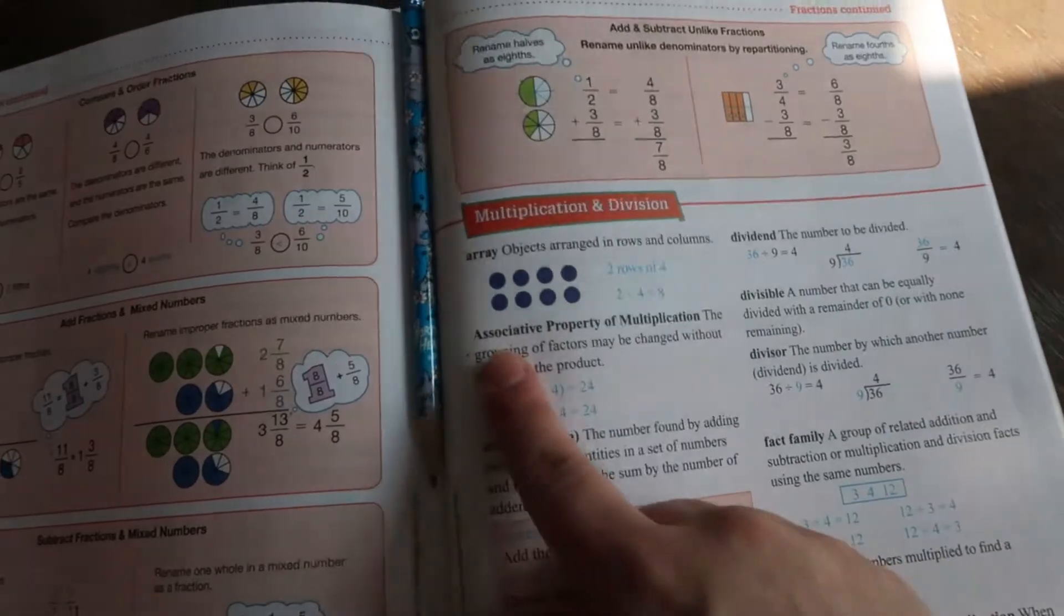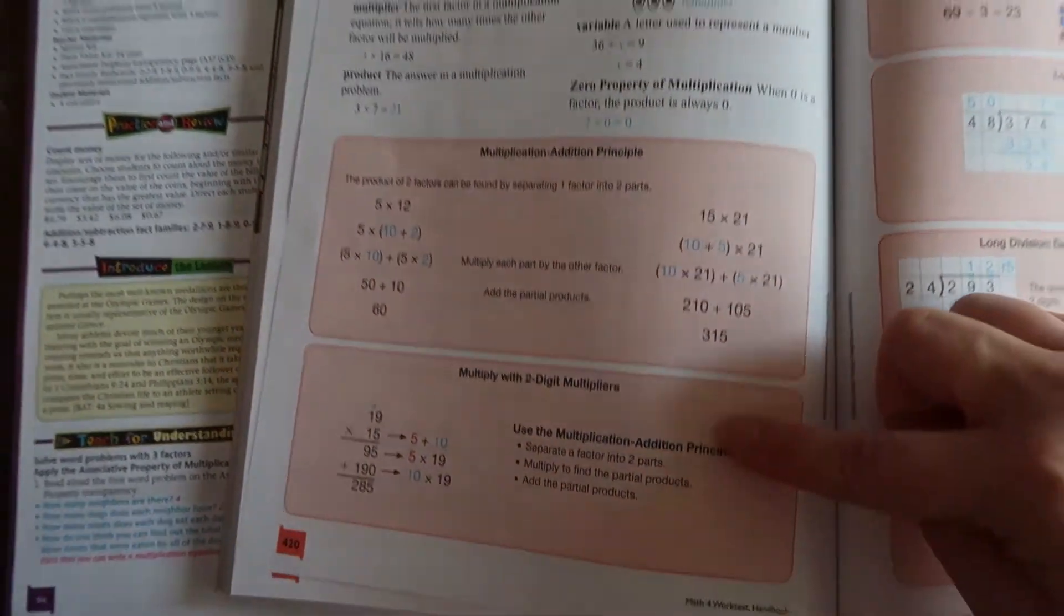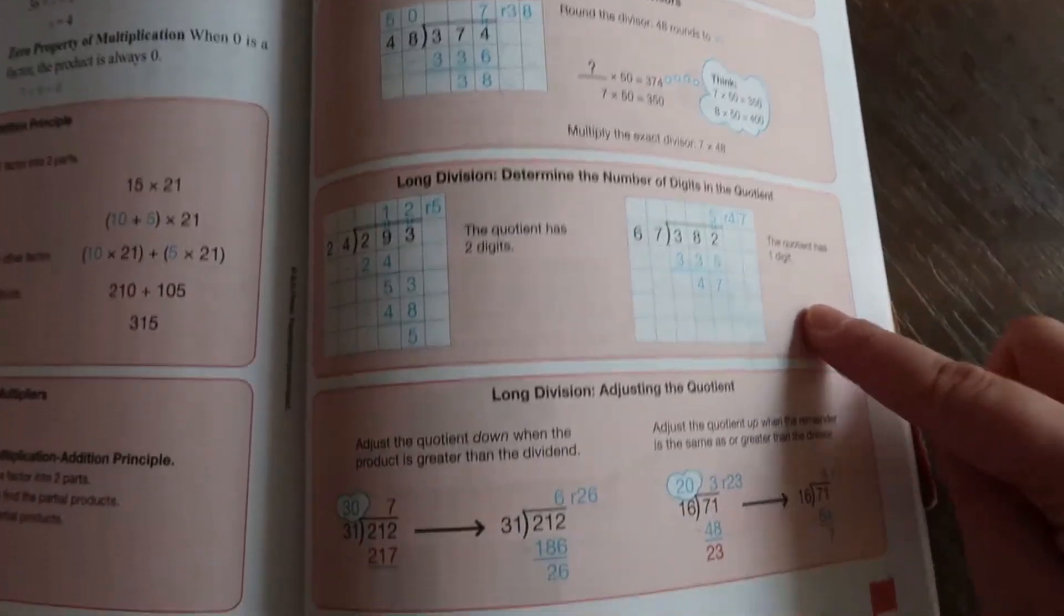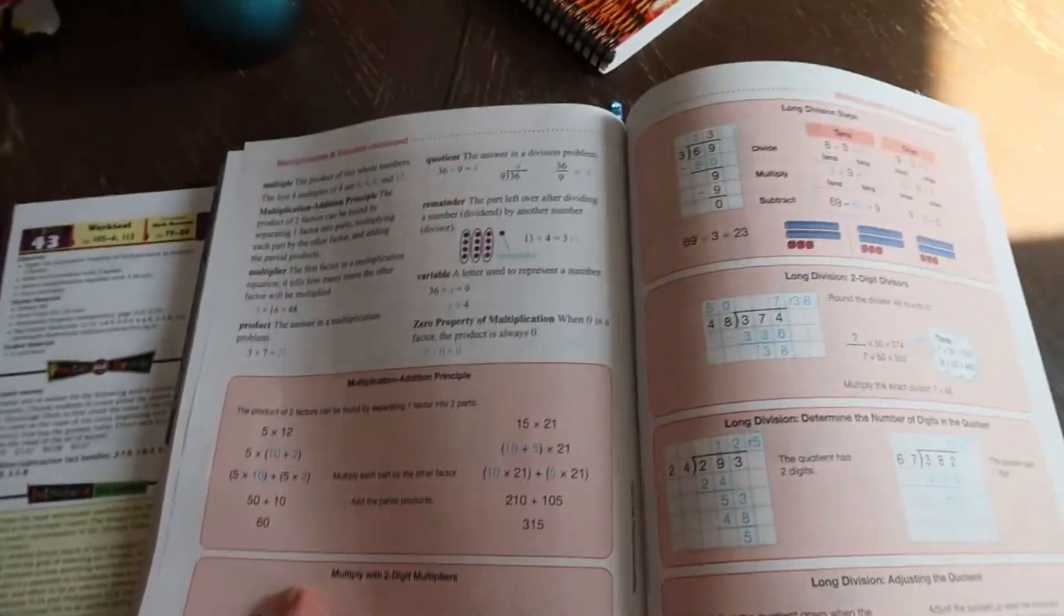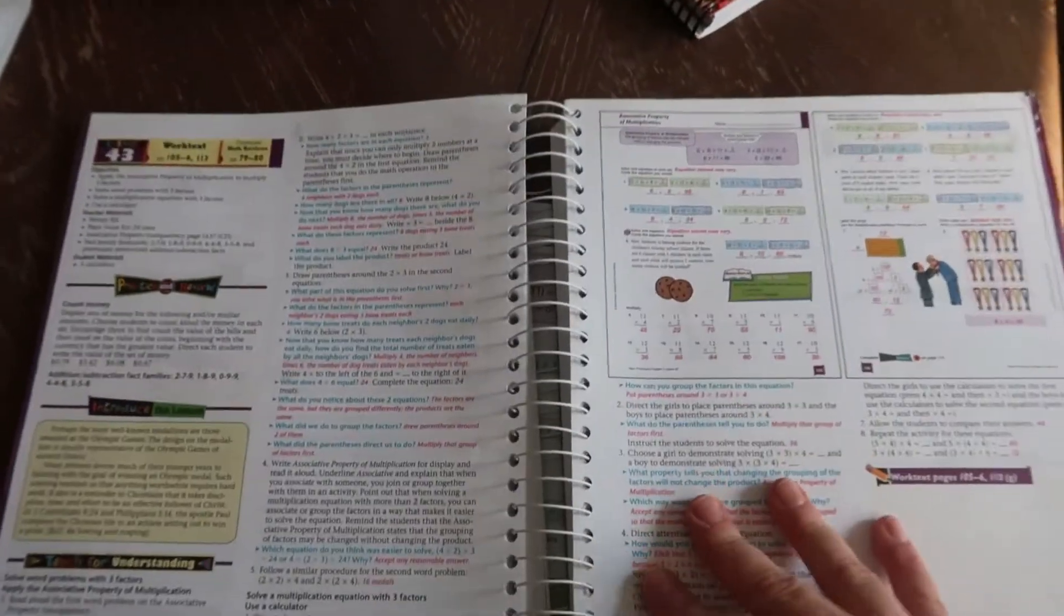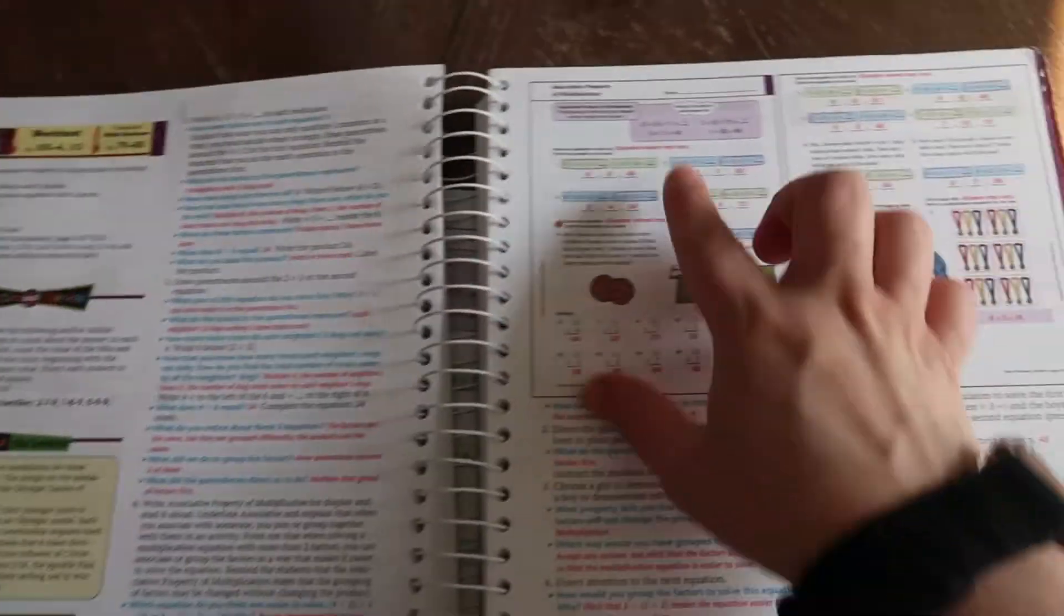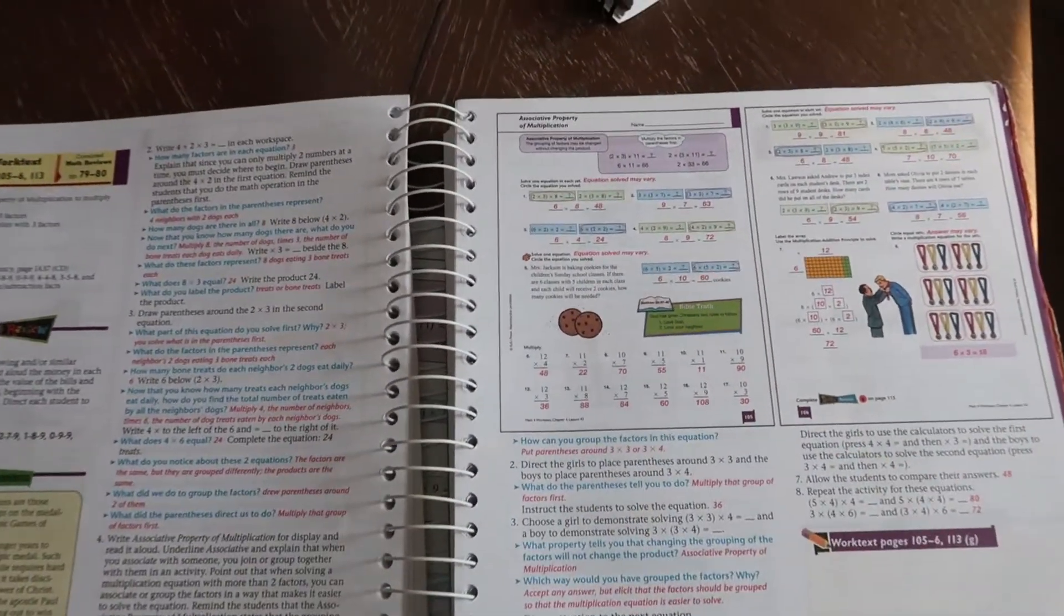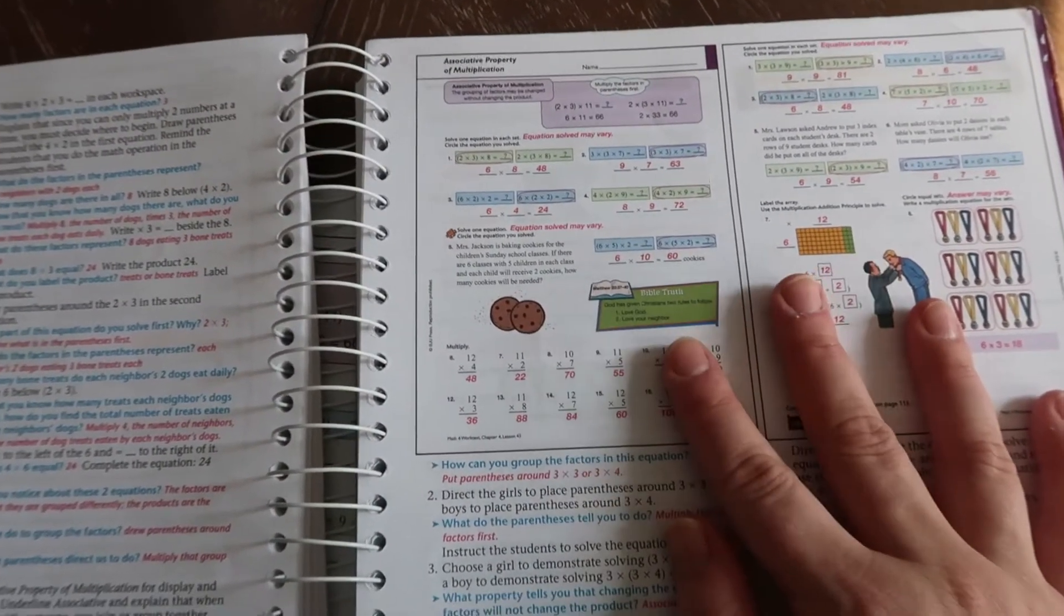So multiplication and division. This has the associative property of multiplication that we're going to be talking about today, a little bit of a definition of it, some of the other things that we've been working on in this lesson. So it does have a little bit. Honestly, I feel like at these ages and grades, this is probably adequate enough.